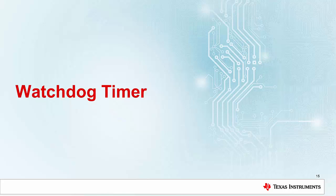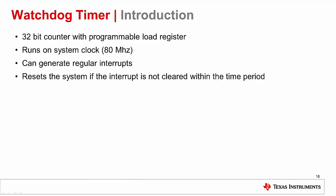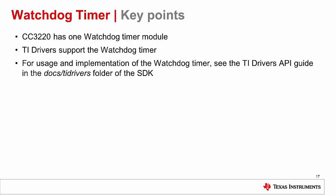In our last section, we will discuss the Watchdog Timer. The Watchdog Timer is a 32-bit counter that will reset the system if the interrupt is not cleared. The timer runs from the system clock and can be loaded with a particular value. The CC3220 has one watchdog timer module which is supported by TI drivers. For usage and implementation of the watchdog timer module, see the TI drivers API guide in the Docs TI drivers folder of the CC3220 SDK.